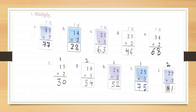E part: thirty four multiply by two. Multiply the ones by two — that is four into two is eight. So write eight under ones. Then multiply the tens by two — that is three into two is six. So your answer will be sixty eight.